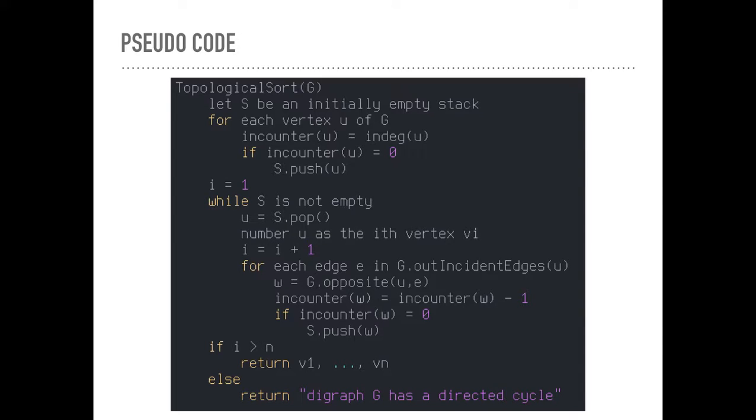But just so you're prepared for the images, we'll do this quick. So i equals 1. So while the stack's not empty, u equals S.pop. So we'll pop one off the stack. And we'll number u as the i-th vertex, vi.